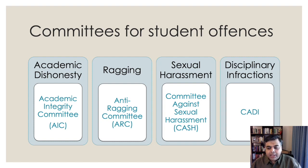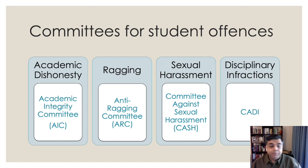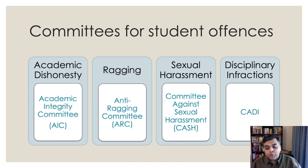Second, we have ragging. The University Grants Commission, or the UGC, has a very broad definition of ragging that includes most forms of harassment inflicted by students on other students — not just seniors against juniors, but even peers in the same batch, or indeed juniors harassing seniors. All of those offenses, and so most forms of student versus student harassment, come under the ambit of the Anti-Ragging Committee.